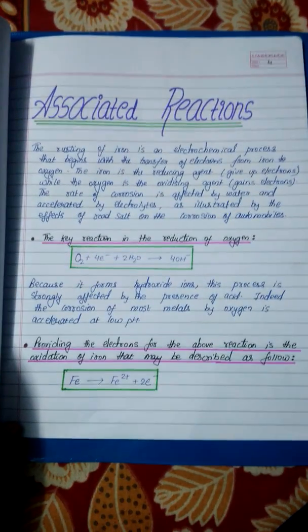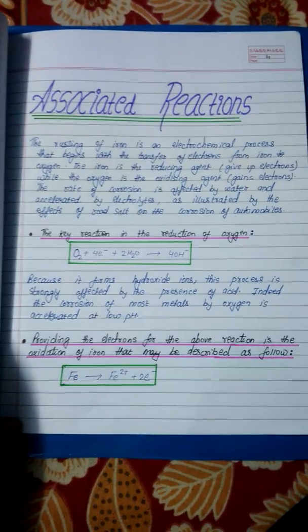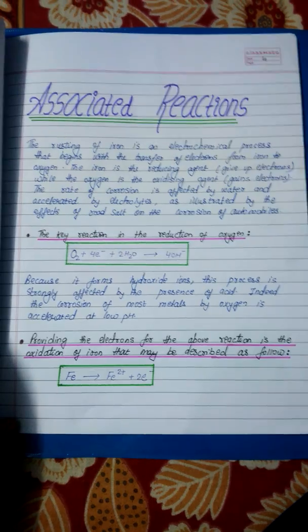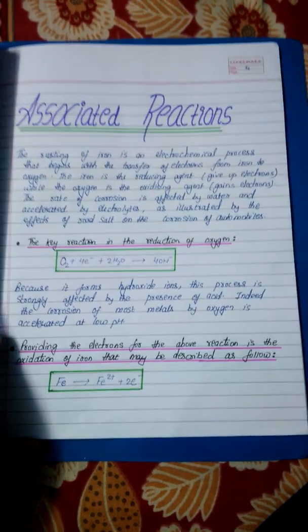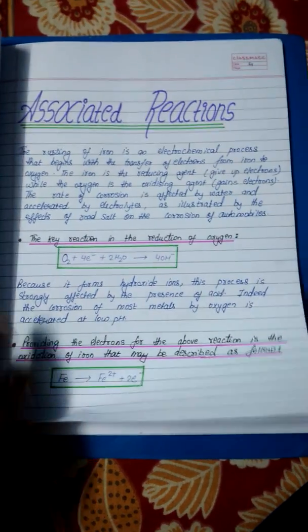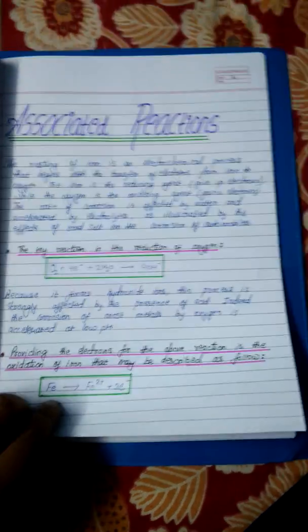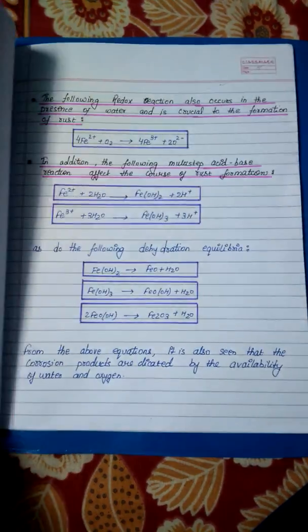Then comes the associated reactions — what are the reactions that take place in the rusting of iron in the presence of oxygen and atmosphere, or air, you can say.